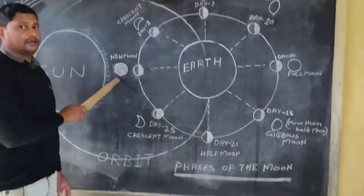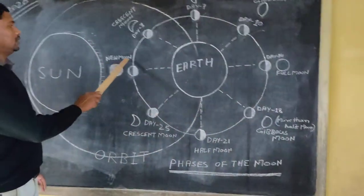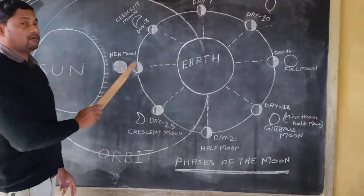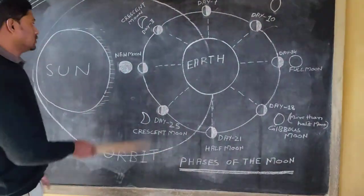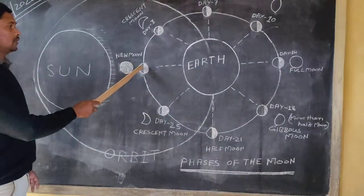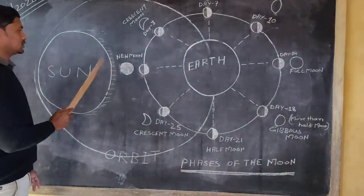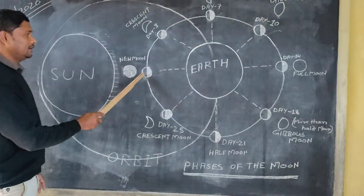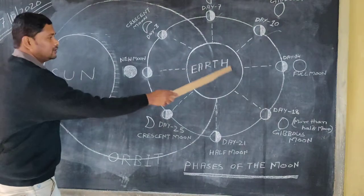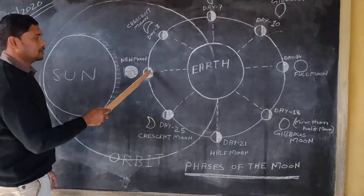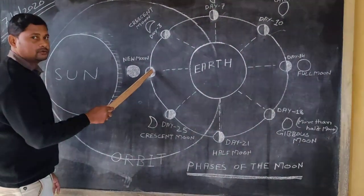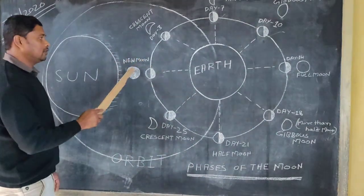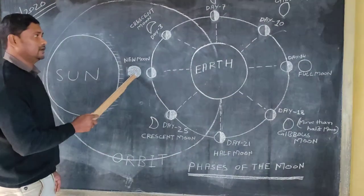Now this is the new moon. When the moon is between the earth and the sun, only one side of the moon is getting the sunlight. As we are living here on the earth, we are seeing the dark side of the moon — that means we are not able to see the moon. So this is known as the new moon: when we are not able to see the moon, the moon is in darkness.